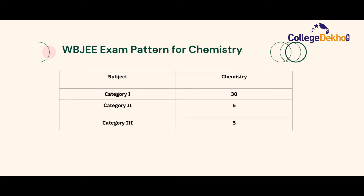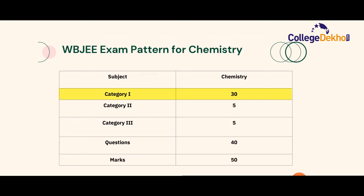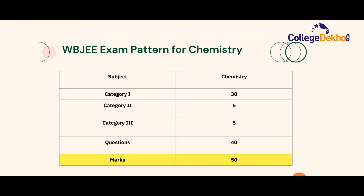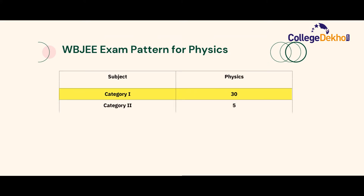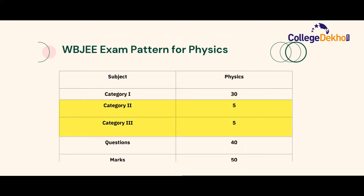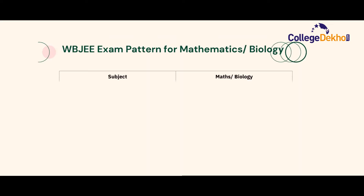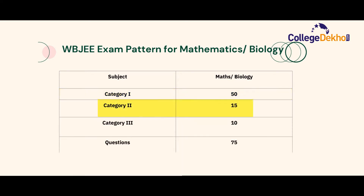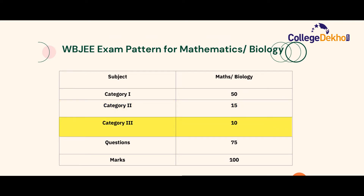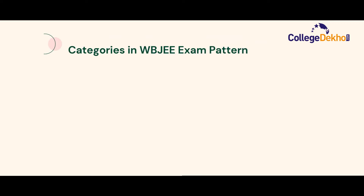Now let us look at the subject-wise exam pattern for WBJEE. For Chemistry, Category 1 has 30 questions, Category 2 and 3 have 5 questions each, making a total of 40 questions for 50 marks. For Physics, Category 1 has 30 questions, Category 2 has 5 questions, and Category 3 has 5 questions — again a total of 40 questions for 50 marks. For Mathematics, there is a slight change: Category 1 has 50 questions, Category 2 has 15 questions, and Category 3 has 10 questions, making a total of 75 questions for 100 marks.